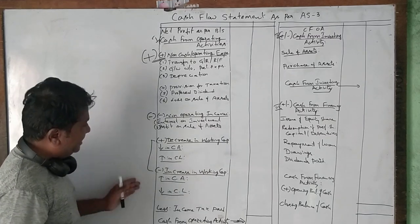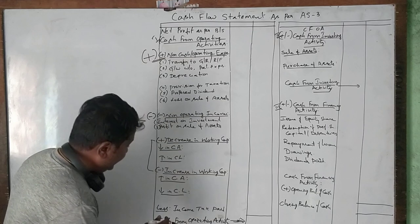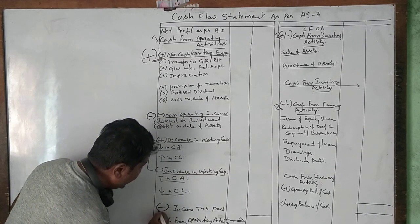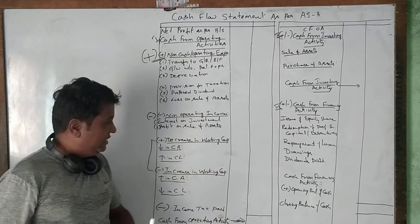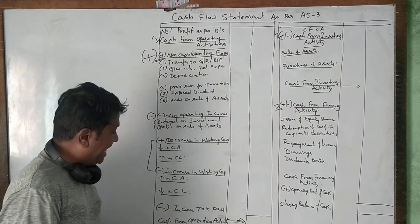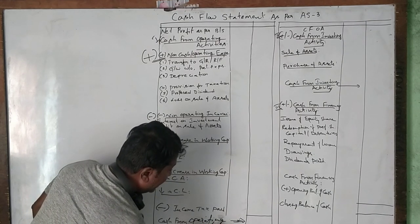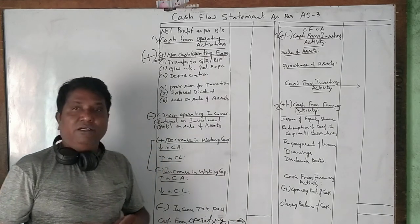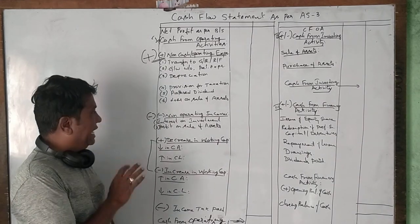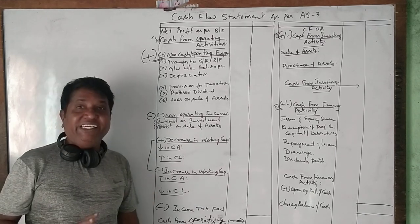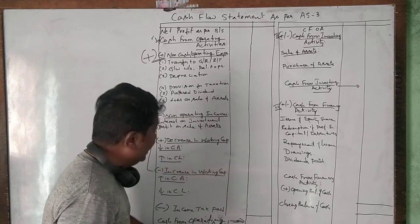After adjusting for increase and decrease in working capital, the final step in operating activity is to deduct income tax paid during the year. After all these adjustments, we arrive at the net cash from operating activity. If you learn cash from operating activity perfectly, you have completed almost 80% of the cash flow statement.